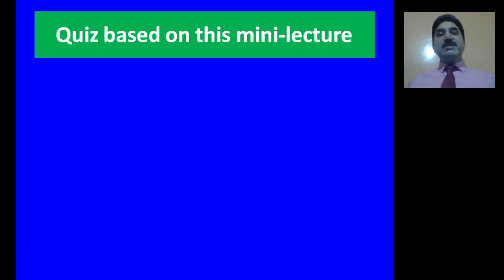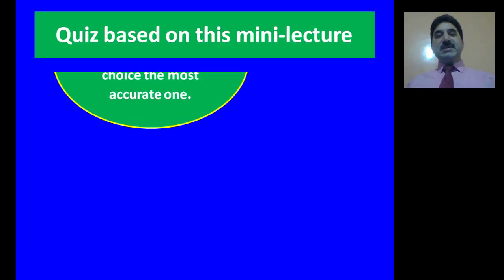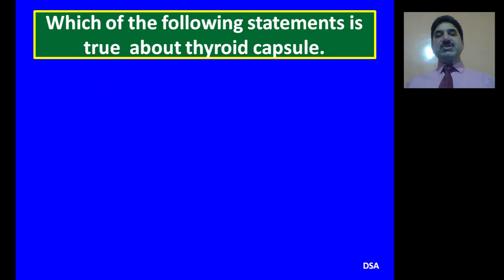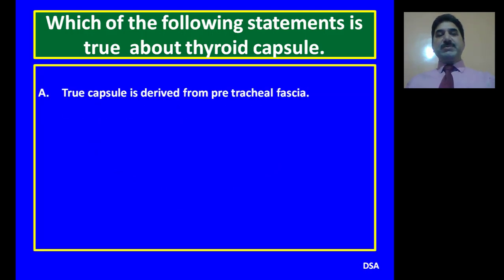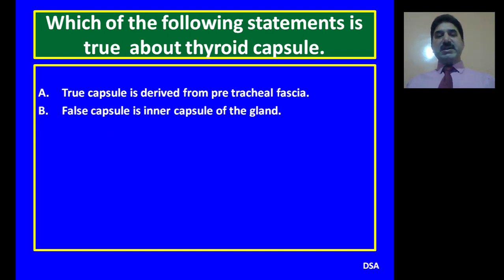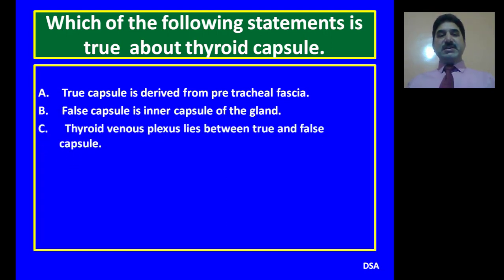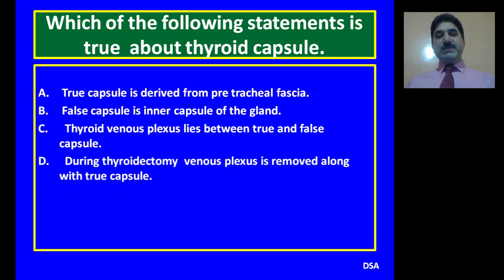Now let us go for a quiz based on this lecture. Question 1: Which of the following statements is true about the thyroid capsule? A. True capsule is derived from pretracheal fascia. B. False capsule is the inner capsule of the thyroid gland. C. Thyroid venous plexuses lie between the true and false capsule. D. During thyroidectomy, the venous plexuses are removed along with the true capsule. D is the correct option.